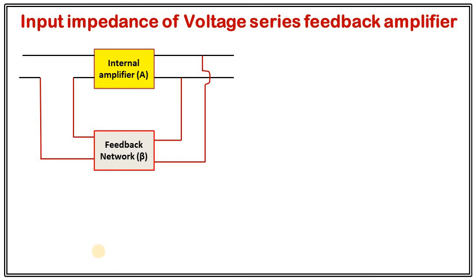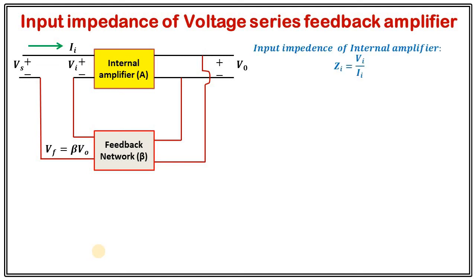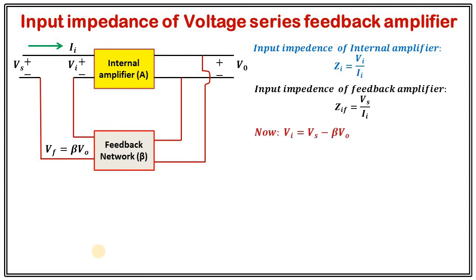Shunt at the output means voltage sampling, and series at the input means series mixing. Now looking at this picture, the input impedance for the internal amplifier is written as Vi/Ii — that is the current going inside the amplifier and the applied voltage across it. The input impedance of the feedback amplifier is VS/Ii, because the current is the same through the whole negative feedback amplifier and internal amplifier, but the voltage changes: for the internal amplifier it is Vi, and for the feedback amplifier it is VS. For negative feedback, Vi equals VS minus βV0, where βV0 is the feedback signal.